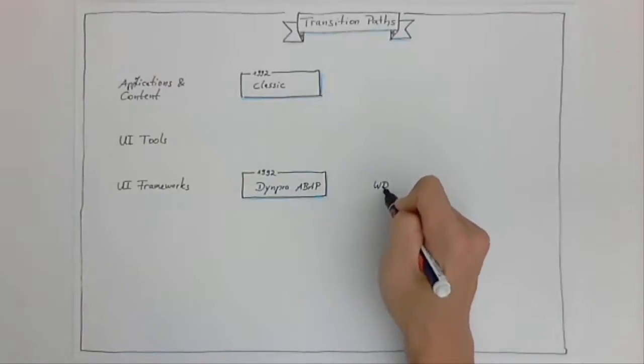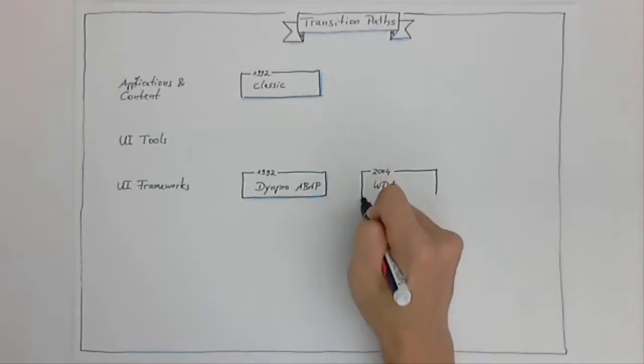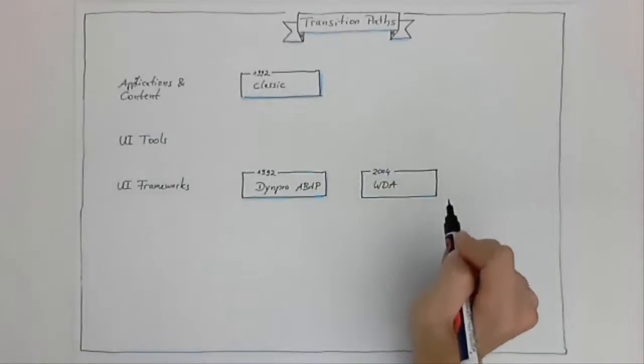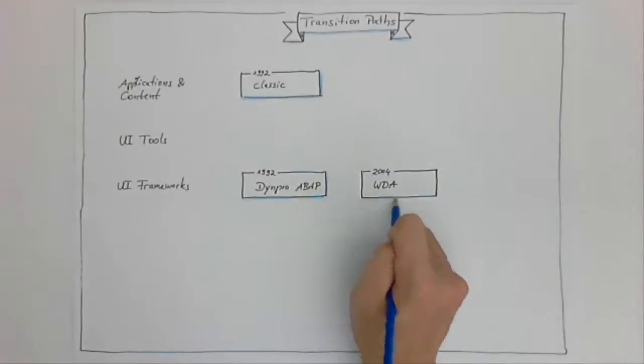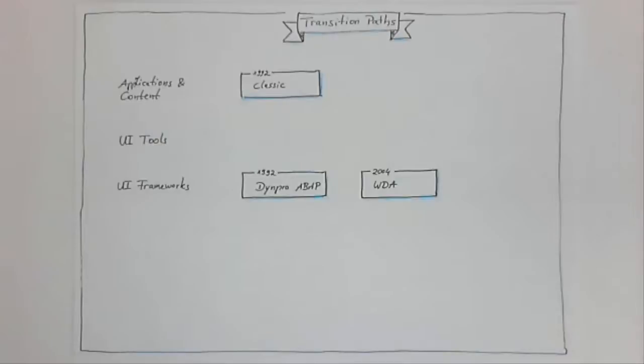In 2004 this was Web DUN Pro ABAP. And again, SAP started application development on top of this framework. You should know at this point that SAP was not just developing applications that were either completely new in the portfolio or replacements of existing transactions.